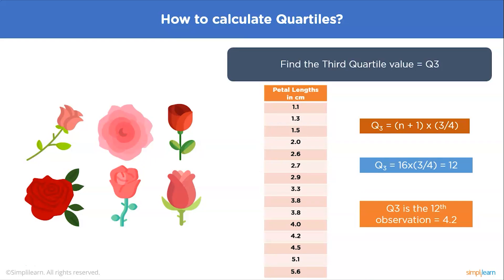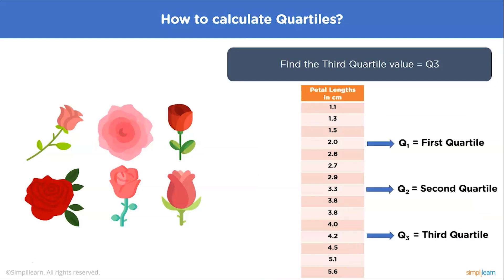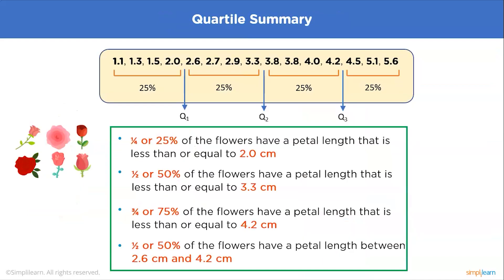Q1, the 4th observation, is equal to 2.0 — this is our first quartile. To calculate Q3, the top 25 percent of the data, we multiply (n+1) × (3/4), giving us the 12th observation, which equals 4.2. So we have Q1 = 2.0, Q2 = 3.3, and Q3 = 4.2.